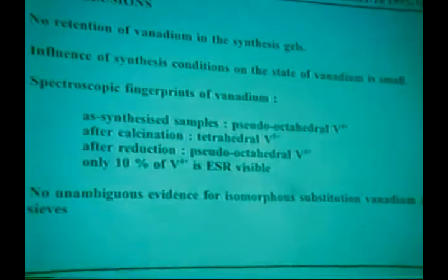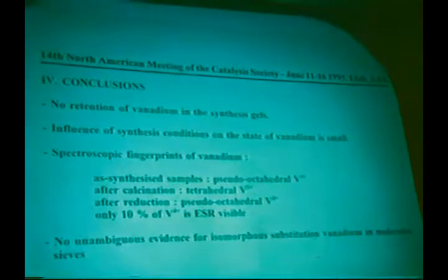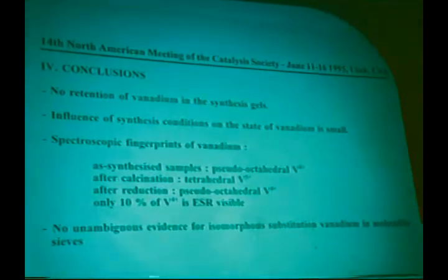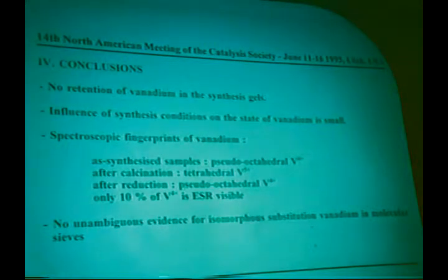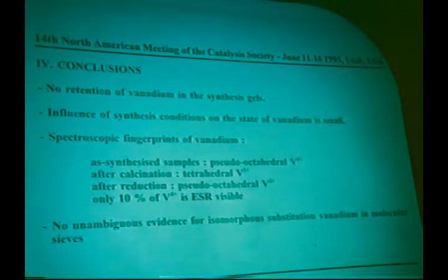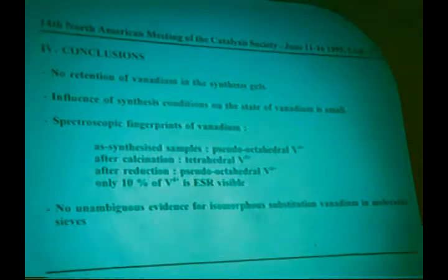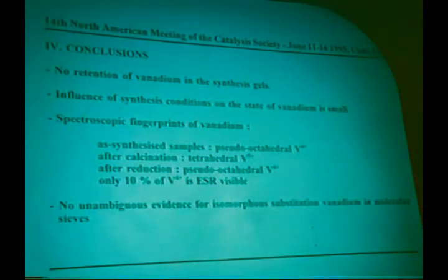Up to the conclusions now. I've shown you that vanadium 4+ in the initial gel is present as a pseudo-octahedral species and has only a small affinity for the gel. I've also shown that the influence of the synthesis condition on the state of vanadium is rather small. It has always to do with pseudo-octahedral vanadium. We have found some spectroscopic fingerprints.